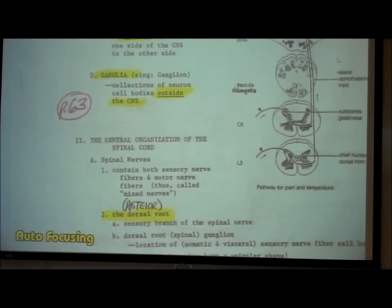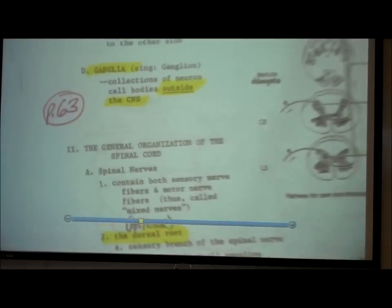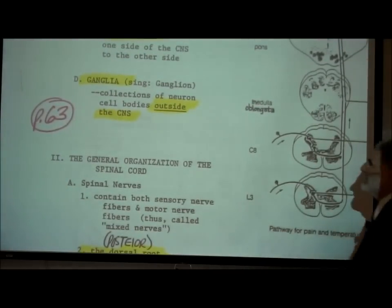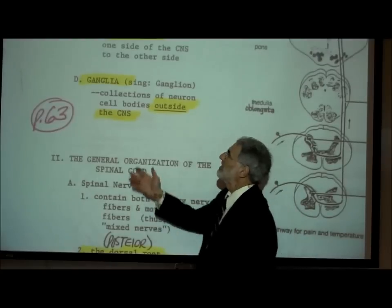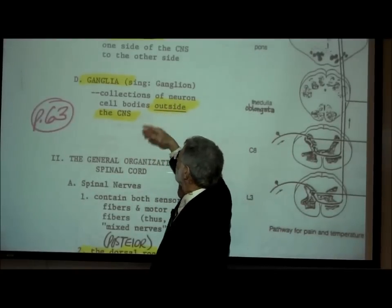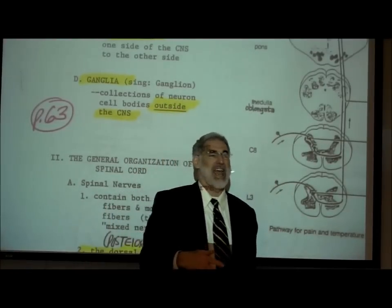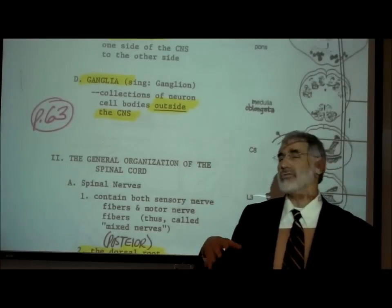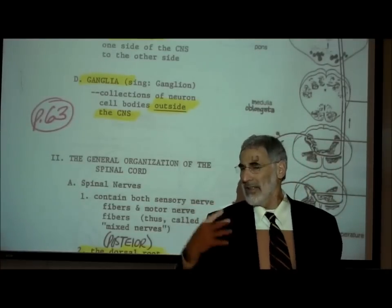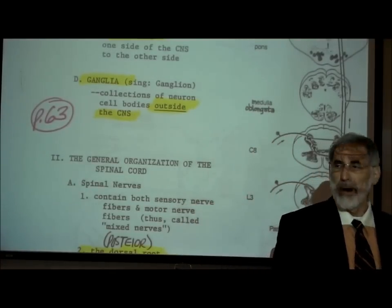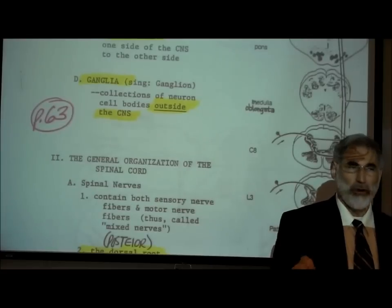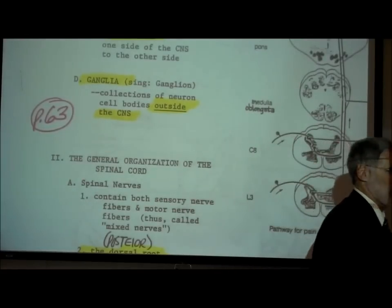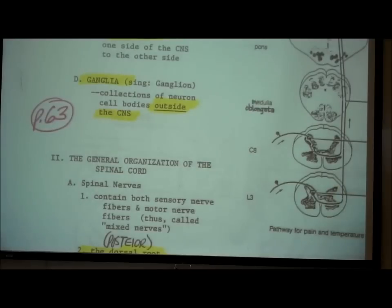The fourth term is ganglia — singular is ganglion, plural is ganglia. What is a ganglion? It is a collection of neuron cell bodies located outside the central nervous system, outside the brain or spinal cord.